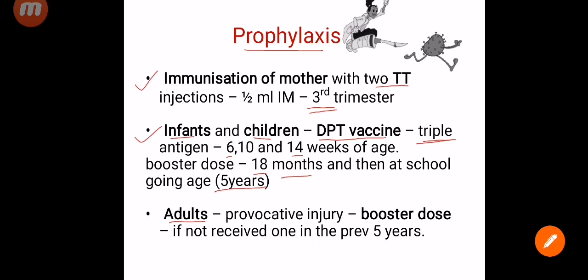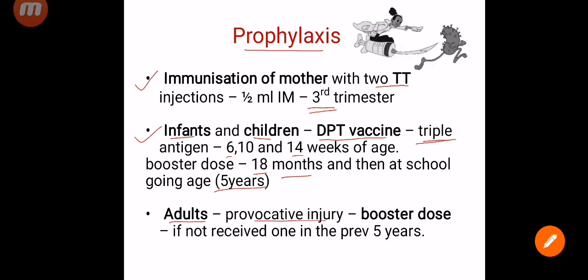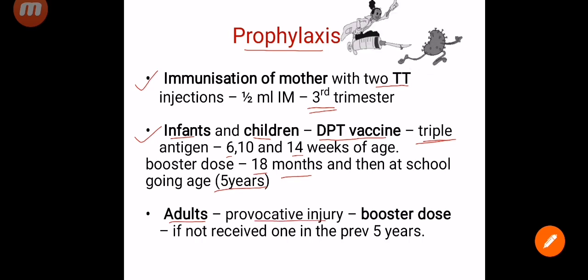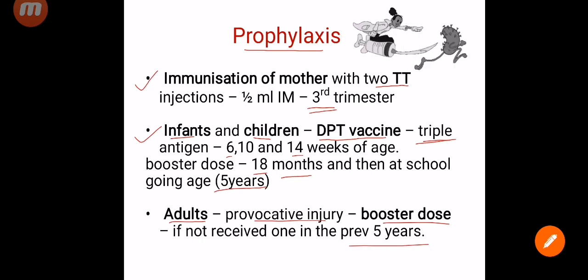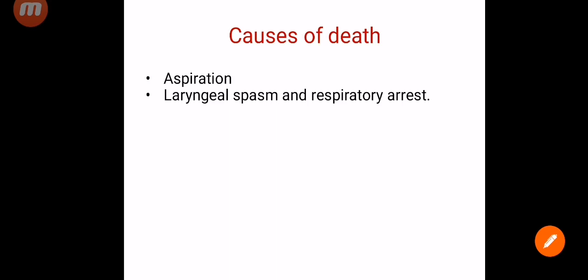For adults, a tetanus injection is given only if there is a provocative injury and the patient has not had a booster dose in the previous five years. The main causes of death in tetanus are aspiration, laryngeal spasm, and respiratory arrest.